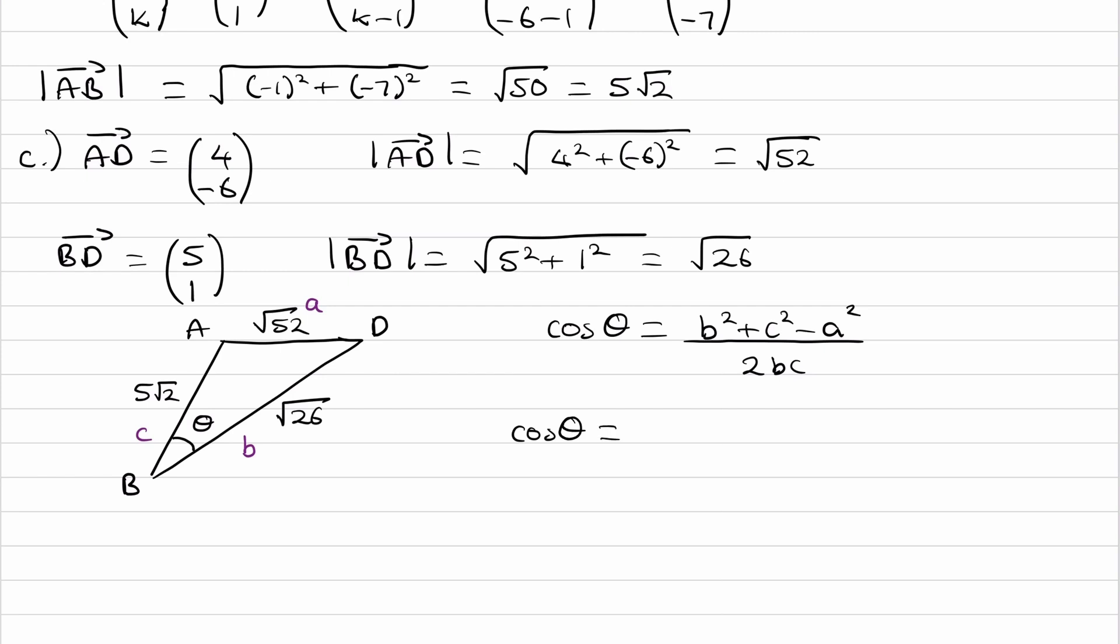And then we can put everything in. So B squared, 26. C squared, so 5 root 2 squared. Remember, 5 root 2 is root 50. So 5 root 2 squared is just 50 minus A squared, 52 squared. And then all divided by 2BC, 2 times B times C.